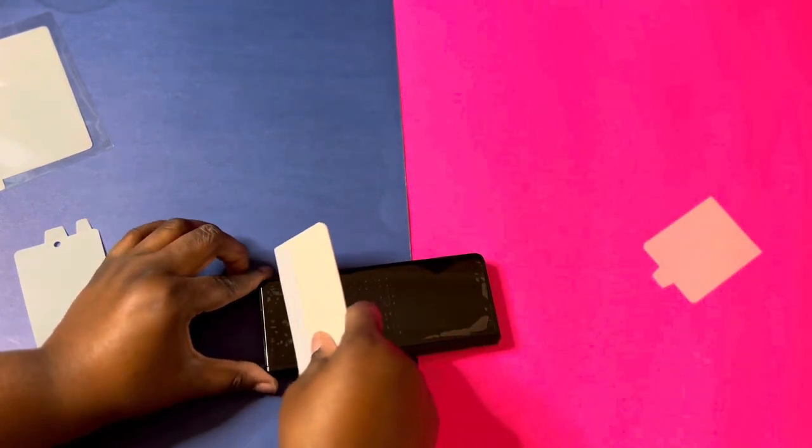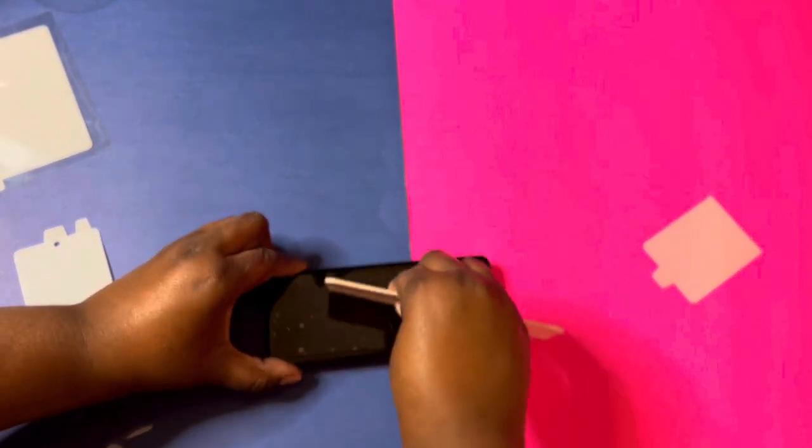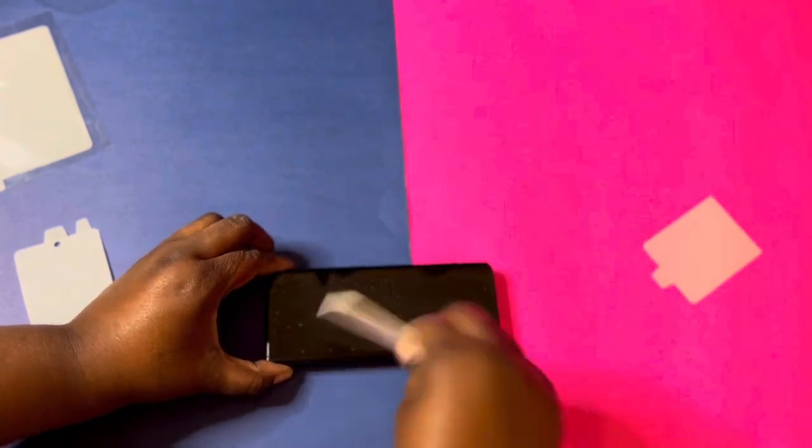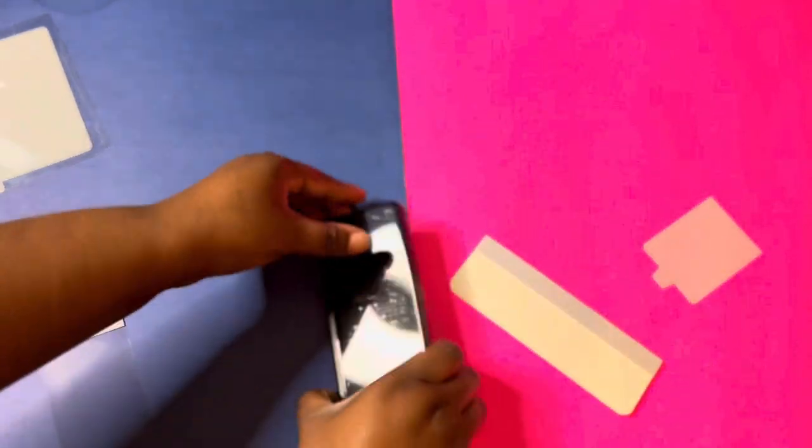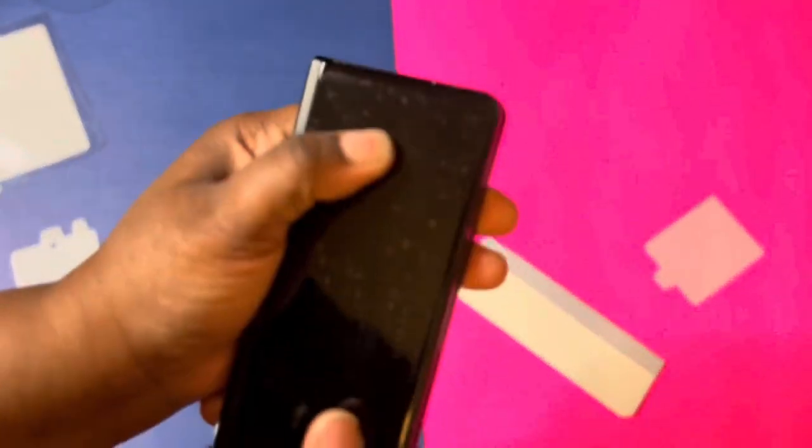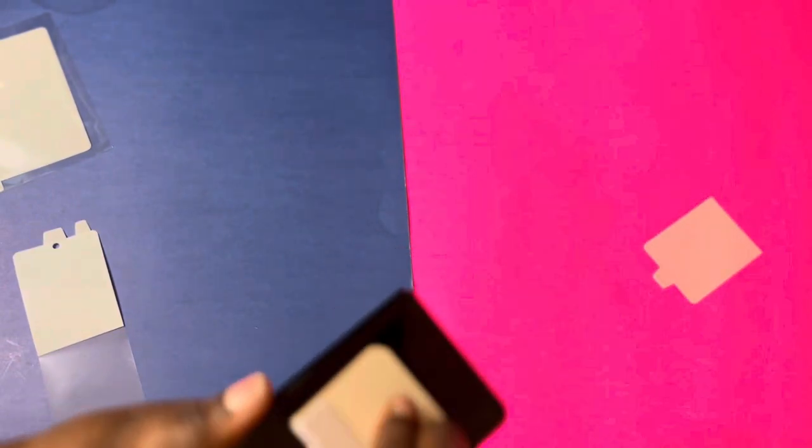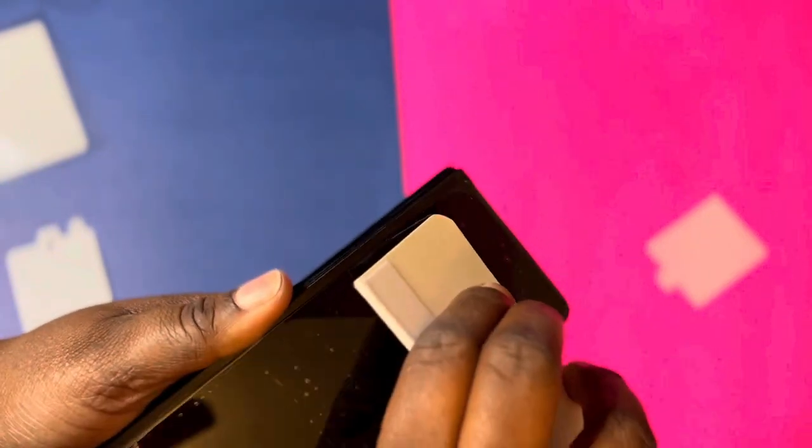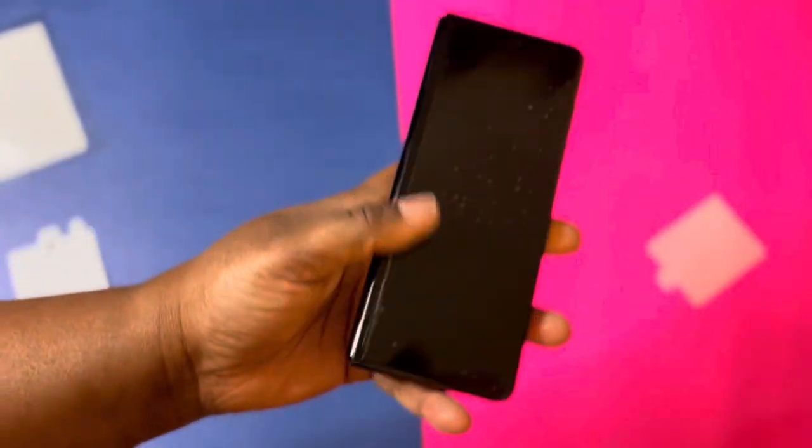So pretty much now the front of my Z Fold 3 is protected, but this is the film screen protector, which is okay for me. I don't mind a film screen protector. I have a little bubbles, but by the day and by the night and the week, those will eventually go away. But if you're just a bubble freak and you don't want them there, you can keep working them out like so. I'm not too worried about it because I know over time they will eventually work their way out. So that's what that looks like.